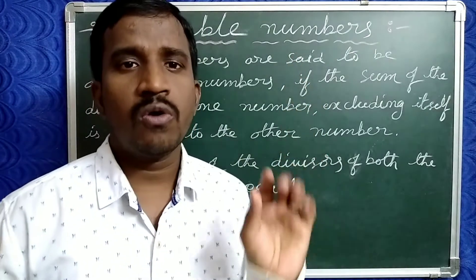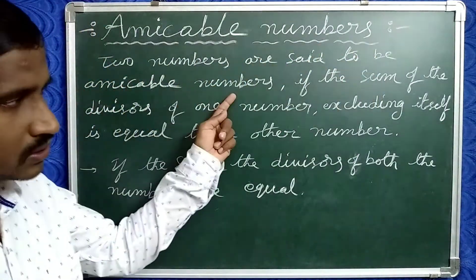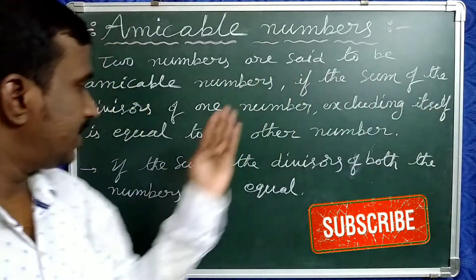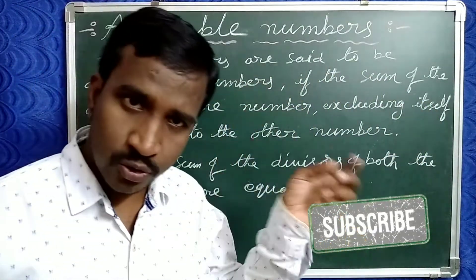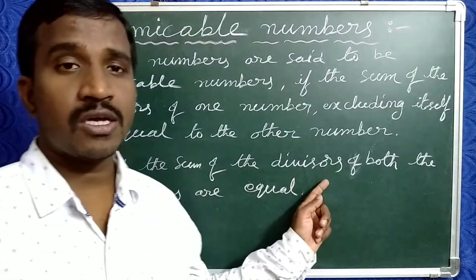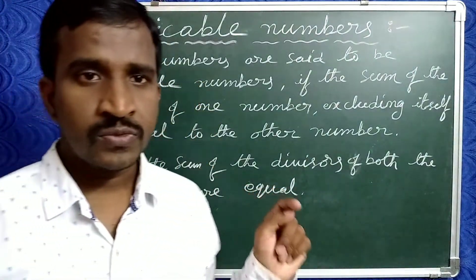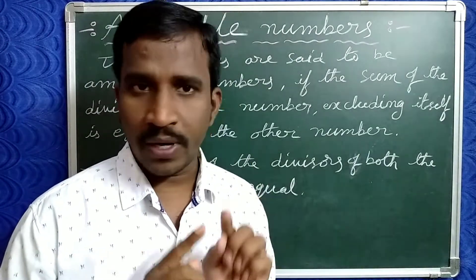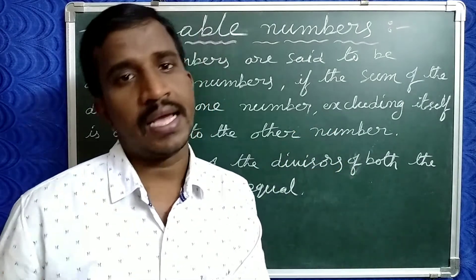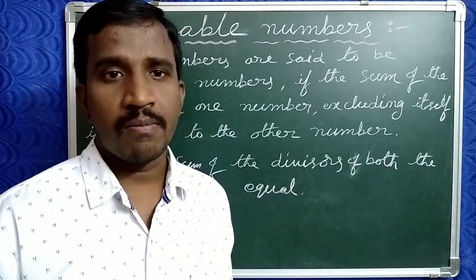First of all, we will discuss about amicable numbers. Two numbers are said to be amicable numbers if the sum of the divisors of one number except itself equals the other number. The sum of the divisors of both numbers will be equal — that is the key concept for amicable numbers. So the sum of all divisors of the first number equals the sum of all divisors of the second number.